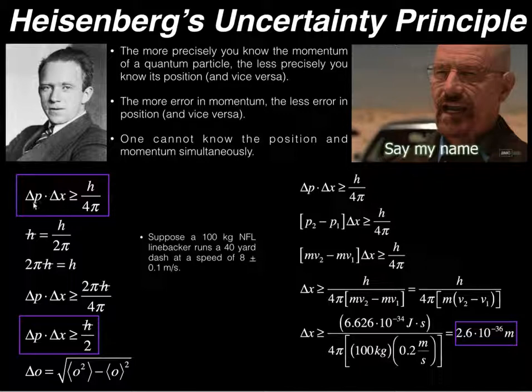Likewise, this is the uncertainty or the error in momentum. And if you take those two uncertainties and you multiply them together, that value has to be greater than or equal to h, which is Planck's constant divided by 4 pi.